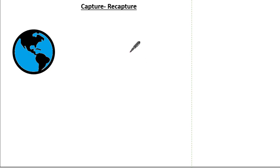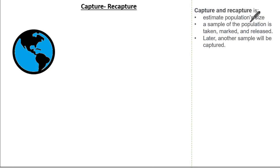Hi everyone, and welcome to this tutorial on Capture and Recapture. Capture and Recapture is a method commonly used in ecology to estimate a population size where it's impractical to count every individual. A sample of the population is taken, marked, and then released. Later, another sample will be captured, and from here we can estimate the population size.